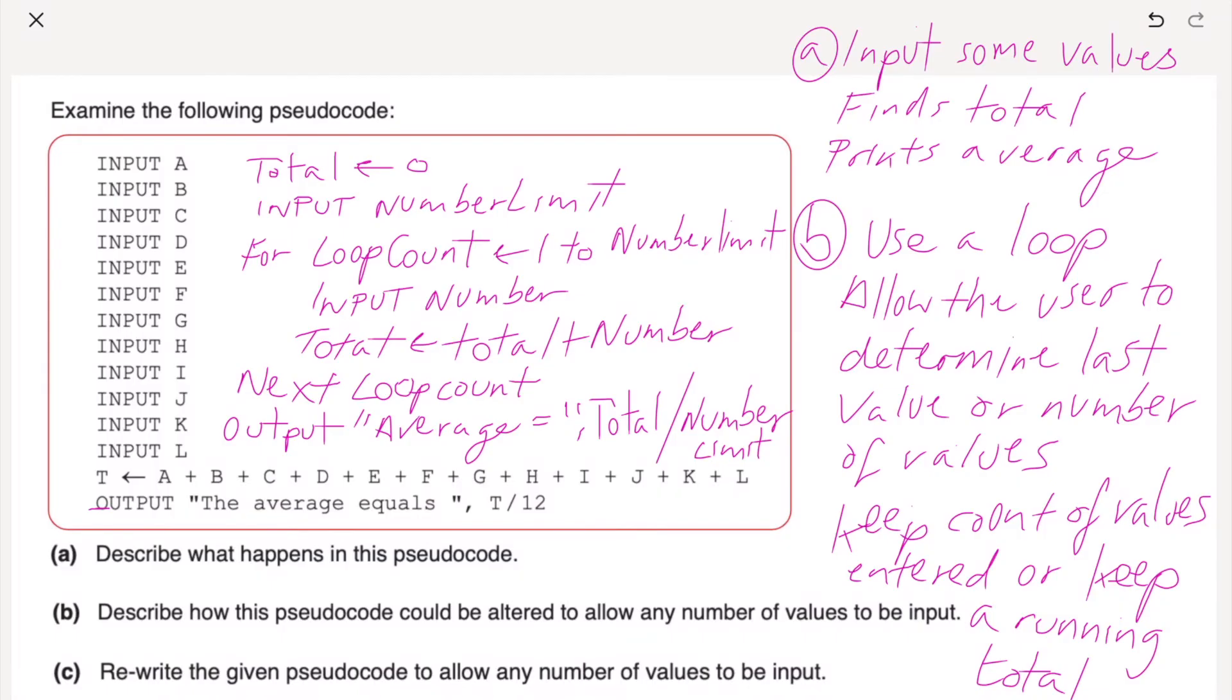So hopefully you can see that. Line one, total has been assigned the value zero, and then we're going to input a number limit by the user. We're going to create a for loop. I've just put for loop count, and we're going to assign that one to whatever the number limit is. So it's going to count from one to whatever we've put in. We're going to input a number, and we're going to assign total plus number to the total up at the top. We're going to go next loop count, so every time going round and round until it gets to num limit. And then we're going to output average equals total divided by num limit. So that should get us full marks there, with a little bit of luck.